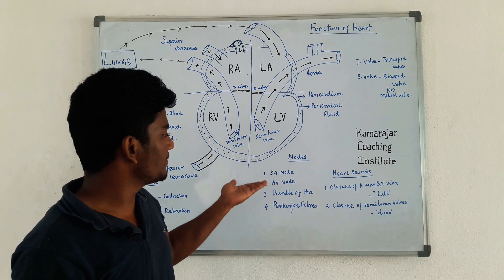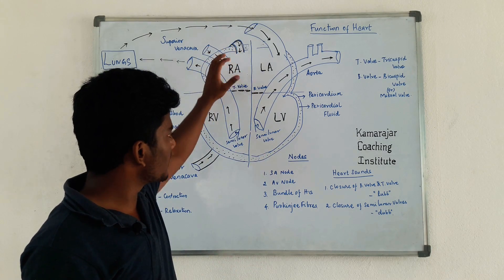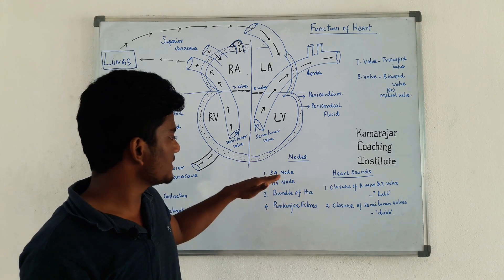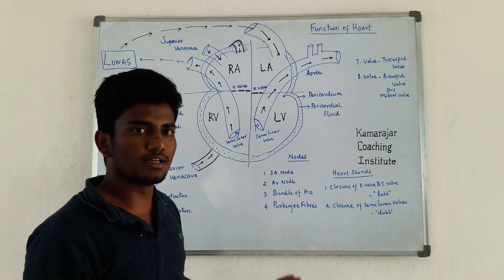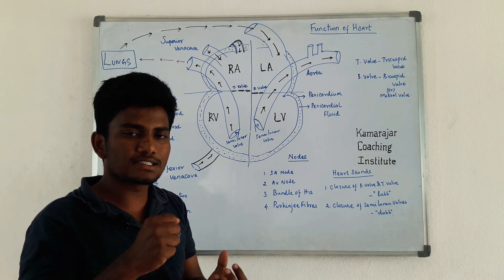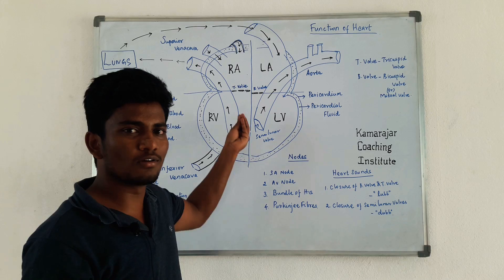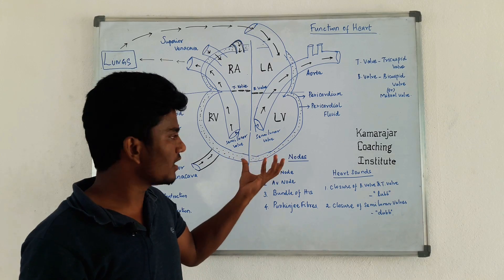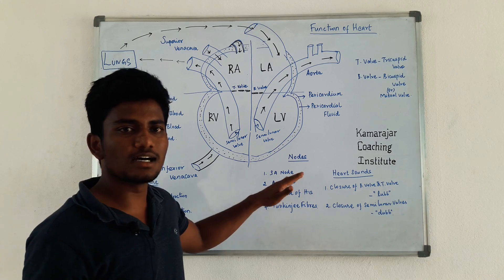The heartbeat and pulse are generated by the heart's nodes. There are four nodes: SA node (Sino-Auricular node), AV node, Bundle of His, and Purkinje fibers. The SA node is the pacemaker of the heart. The first pulse is due to the heart's relaxation and contraction. A pacemaker device mimics this — it turns the pulse on for heartbeat contraction, expansion, and relaxation.